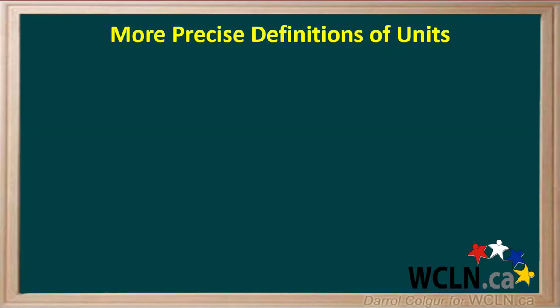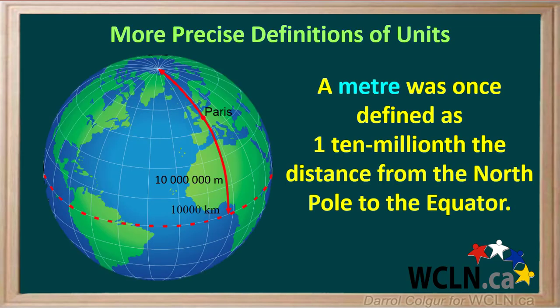We've now had a look at how we can get a rough idea of what a few of the units mean. Let's look at some definitions that are a bit more precise. An early definition of a meter was 1 ten millionth the distance from the north pole to the equator, although this definition is hard for us to visualize what a meter looks like.